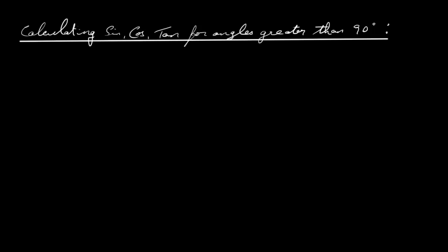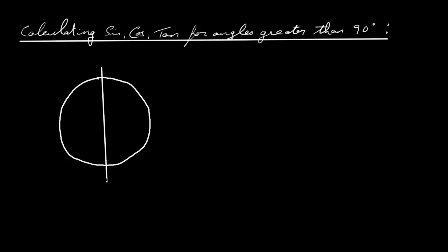Let's have a look at how you calculate sin, cos and tan for angles greater than 90 degrees. Let's take a little step back first and have a look at our unit circle — a circle with radius 1.